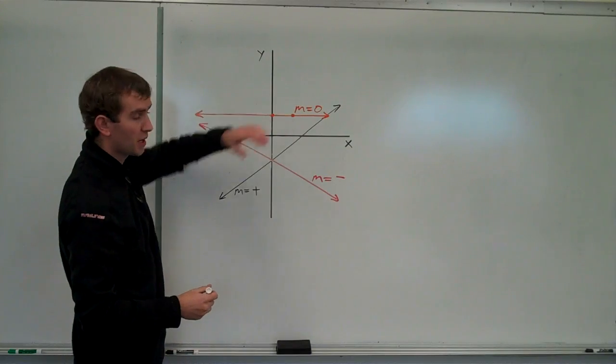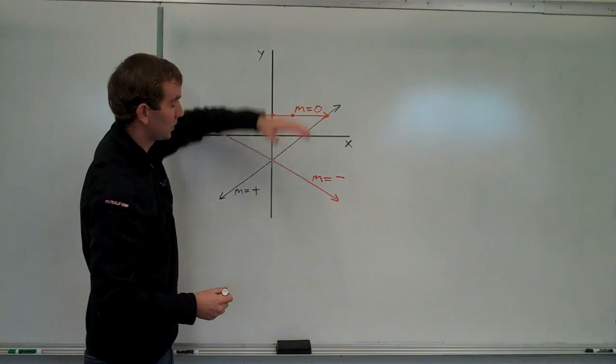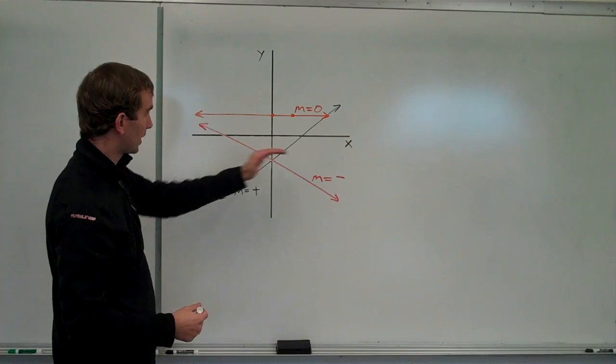My rise is zero. My run is going to be some positive number. So, my slope has to equal zero. For any horizontal line. Any horizontal line, slope has to equal zero. No matter where it is. If it's down here, up here, slope has to be zero if that line is horizontal.